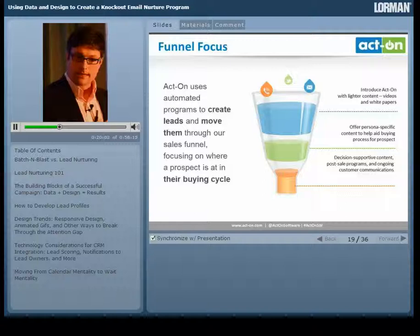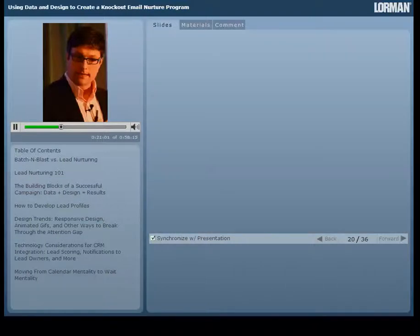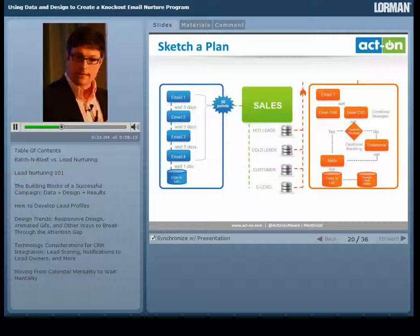For those that are Nurture Addicts, you're going to get a good view of some things we're doing here as well as from one of our outstanding customers. For those doing a little of both or just batch and blasty, this is what you can aspire to be — the next level of marketing. To back it up a bit, let me outline how ActOn uses automated programs. We create leads and move them through our sales funnel focused on where you are in your buying cycle. At the top of the funnel, we introduce you with lighter content — videos, white papers, maybe this webinar. In the middle, we offer content specific to your persona. At the bottom, it's all about decision-supportive content, post-sale programs, and ongoing customer communications.